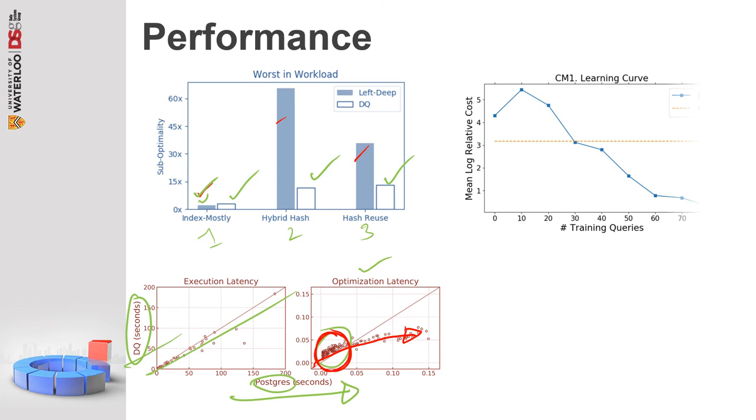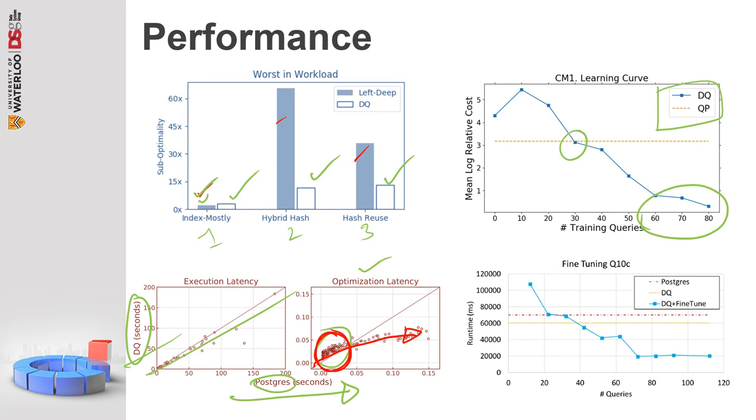The next question they investigated was how much training data does Deep Query need to become effective? This is relevant to the RL, the machine learning part. So they varied the number of training queries given to Deep Query and plotted the mean log relative cost. It shows that Deep Query requires about 60 to 80 training queries to become competitive and can match the quick peak around 30. They also found they could train Deep Query on small queries and test on larger ones as long as relations are all well covered.